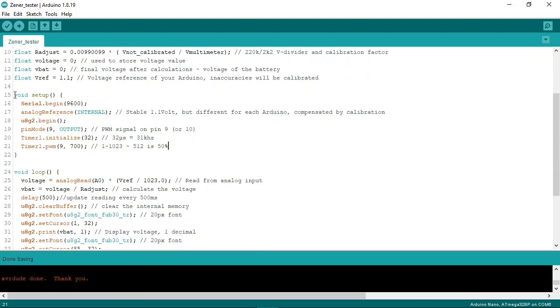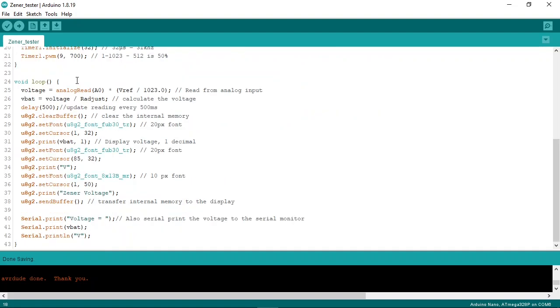Then here we enter setup. We start the serial monitor. So if you do not have an OLED display, you can read the voltage values in the serial monitor. Here we set the analog input reference to the internal 1.1V reference of the Arduino. And we start the display. In these three lines we generate a 31kHz 70% duty cycle PWM signal on digital output D9 to drive the boost converter.